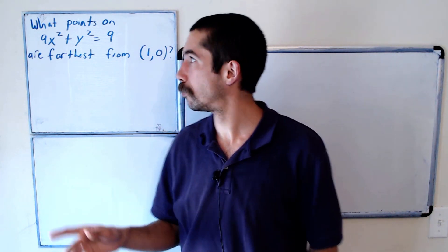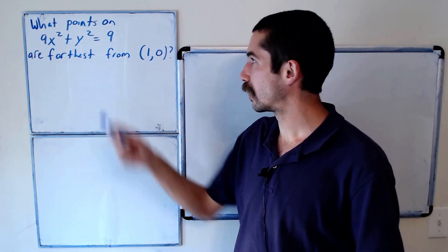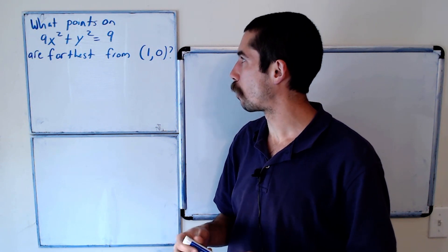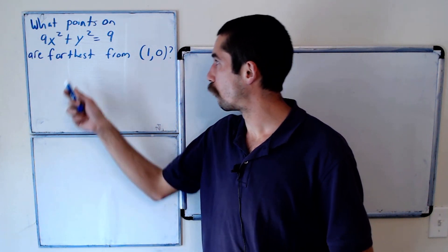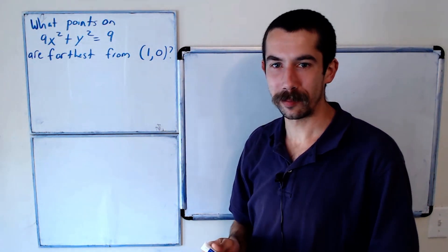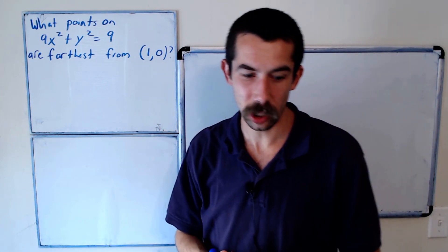Here's an optimization problem for you. What points on the ellipse 4x squared plus y squared equals 9 are farthest from the point (1, 0)? Try it on your own, or you can just watch me solve it.